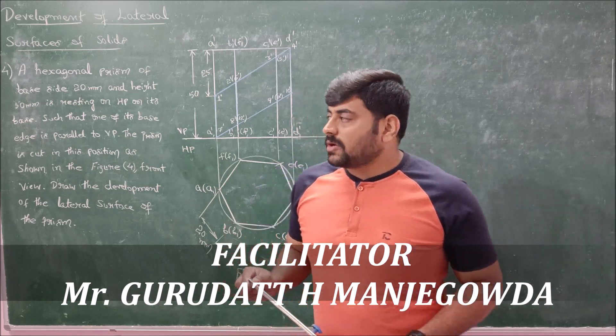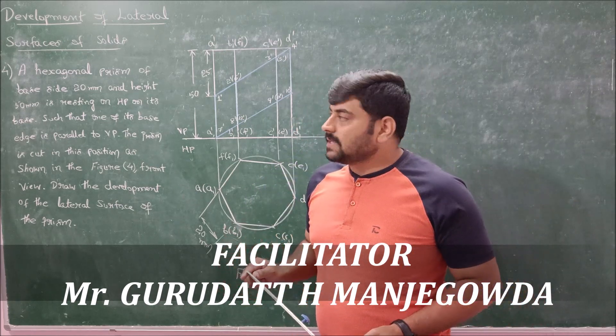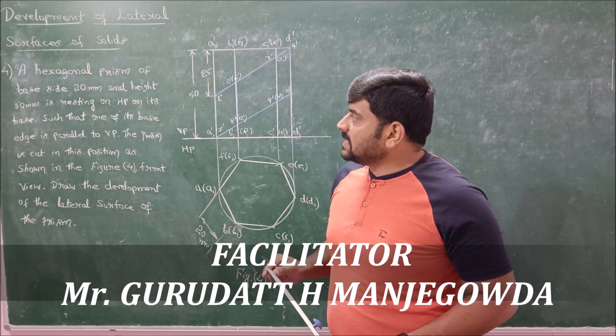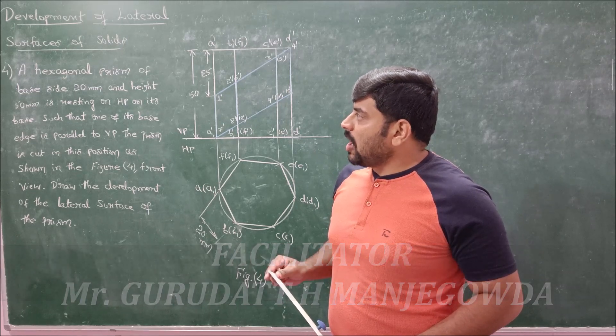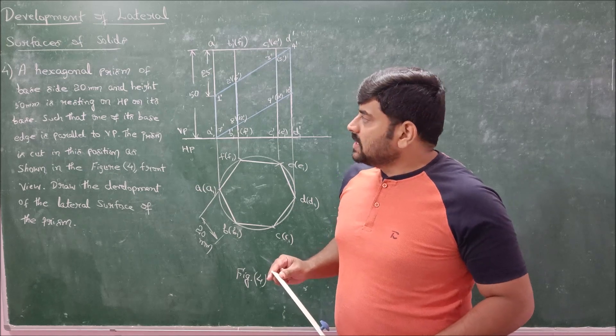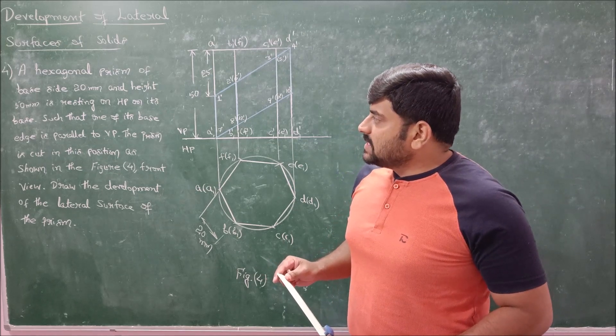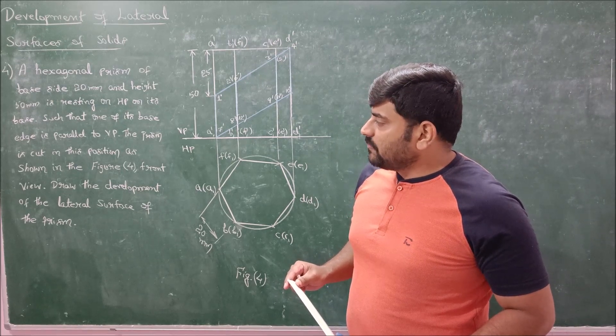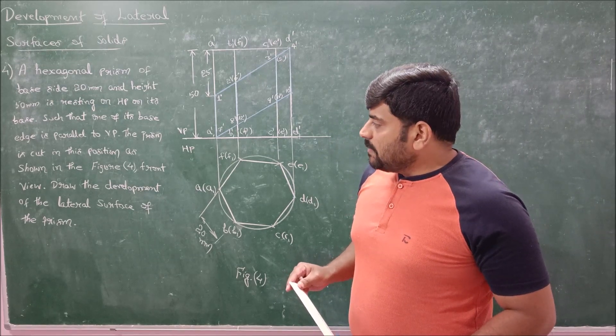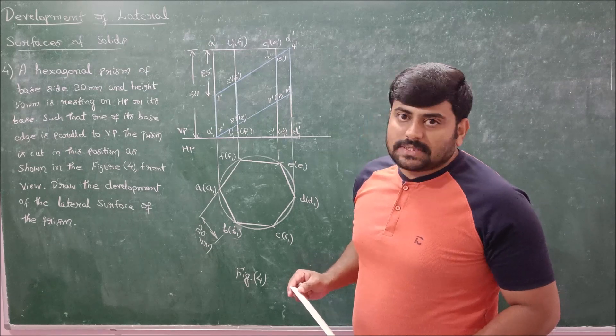Moving ahead, problem number 4 of our discussion states that a hexagonal prism of base height 20 mm and height 50 mm is resting on HP on its base. Such that one of its base edges is parallel to VP, the prism is cut by a section as shown in figure 4. Draw the development of lateral surface of the prism.